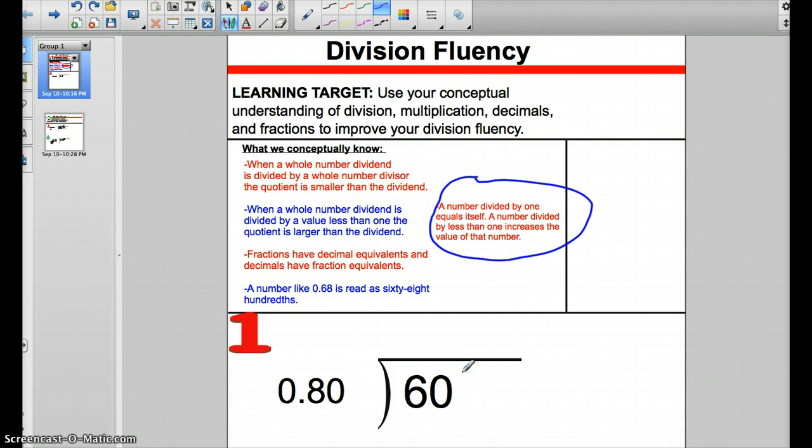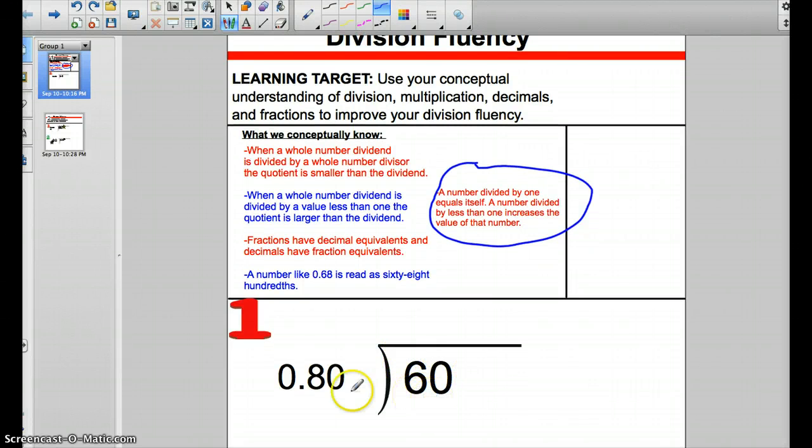I'm going to use a combination of conceptual understanding and what I'll call language conversion to solve this problem. We have a whole number, 60, and a value that's less than 1, 0.80. We want to get them to speak the same language by converting them into both whole numbers. The 60 is already a whole number and the 0.80 isn't. But what I do to my divisor, I'm also going to do to my dividend.